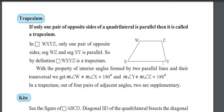The co-interior angles Z plus Y are also equal to 180 degrees. That means out of four pairs of angles, two pairs are supplementary. Supplementary means if the sum of two angles is 180 degrees, then those angles are known as supplementary angles. So W plus X is supplementary and Z plus Y is supplementary.